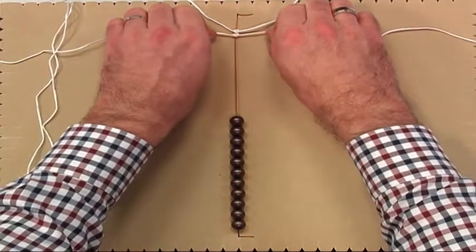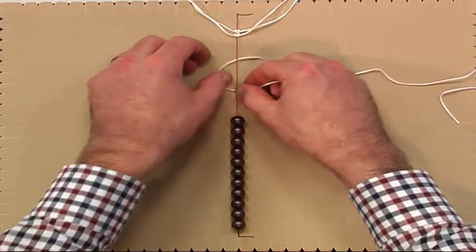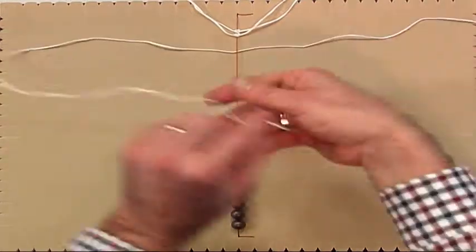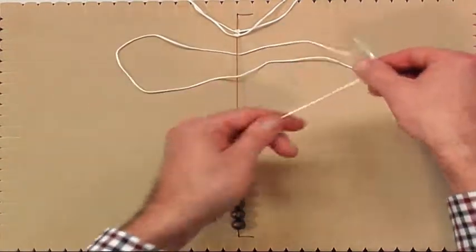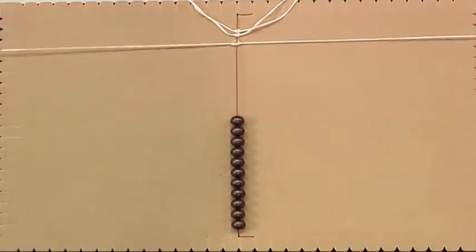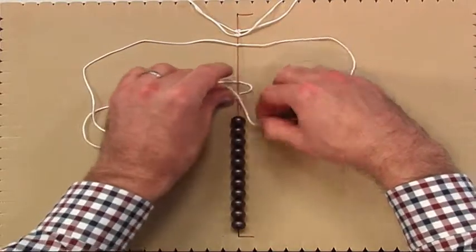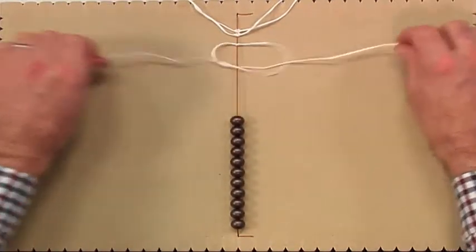Again, as before, we flip that out of the way, and pick up our third strand, and do exactly the same. So we do a half square knot on the left hand side, and a half square knot on the right hand side. Like so.